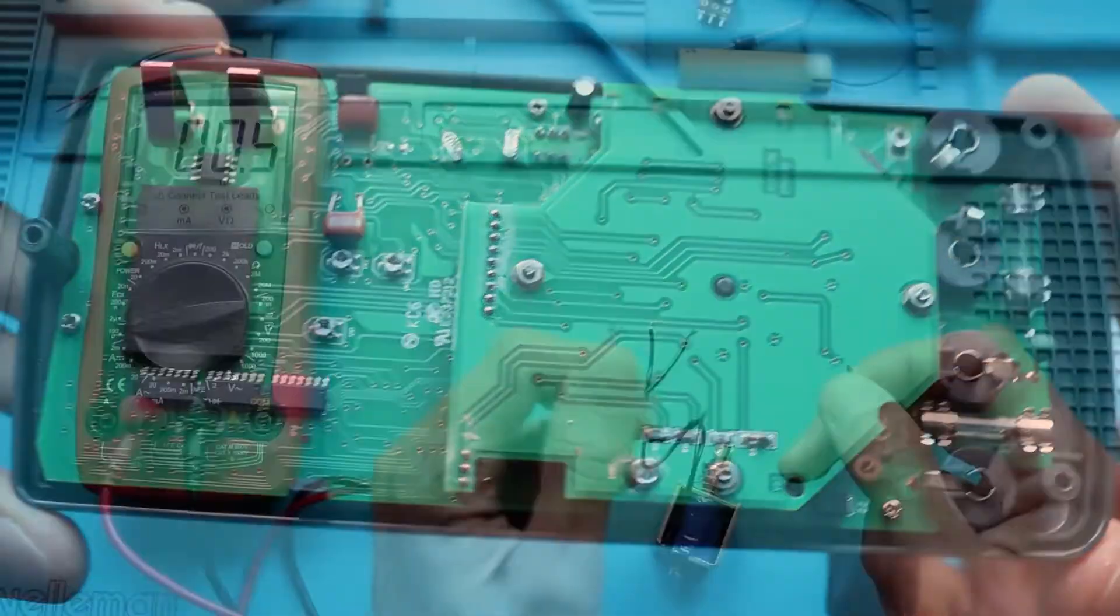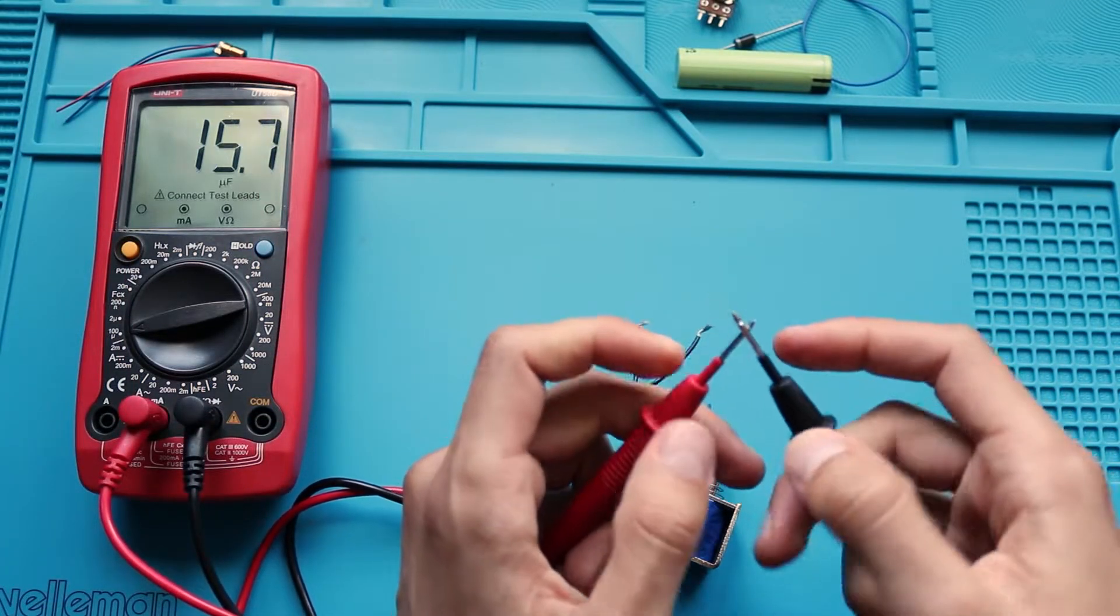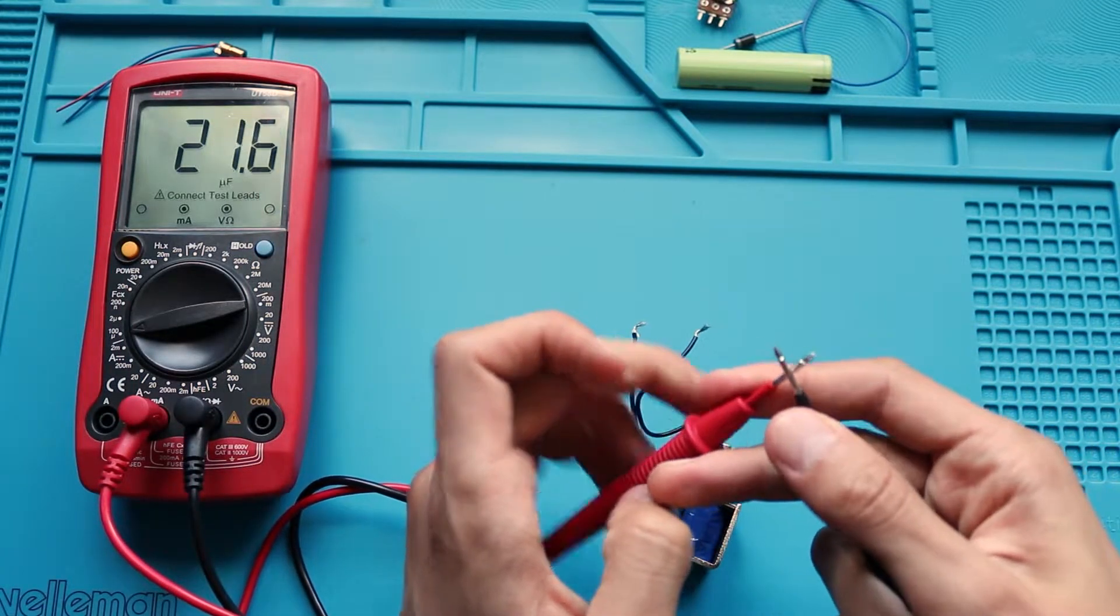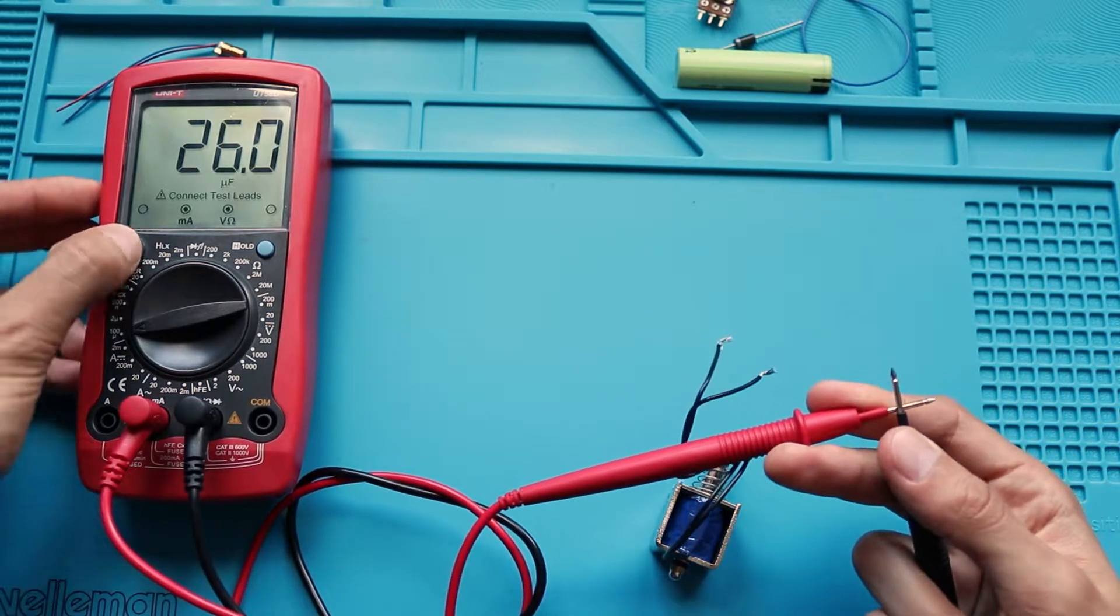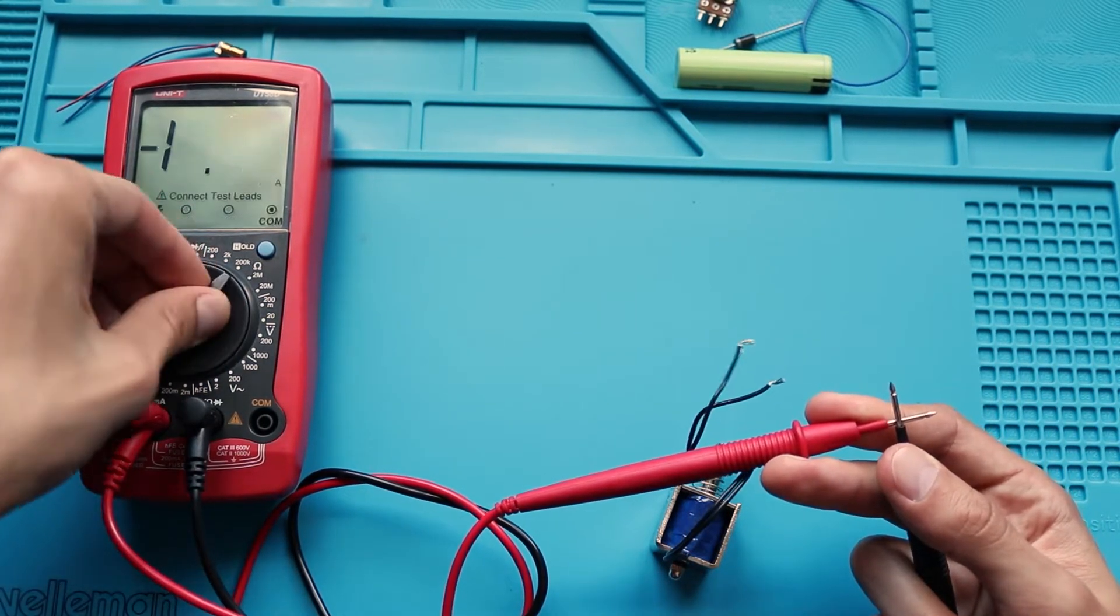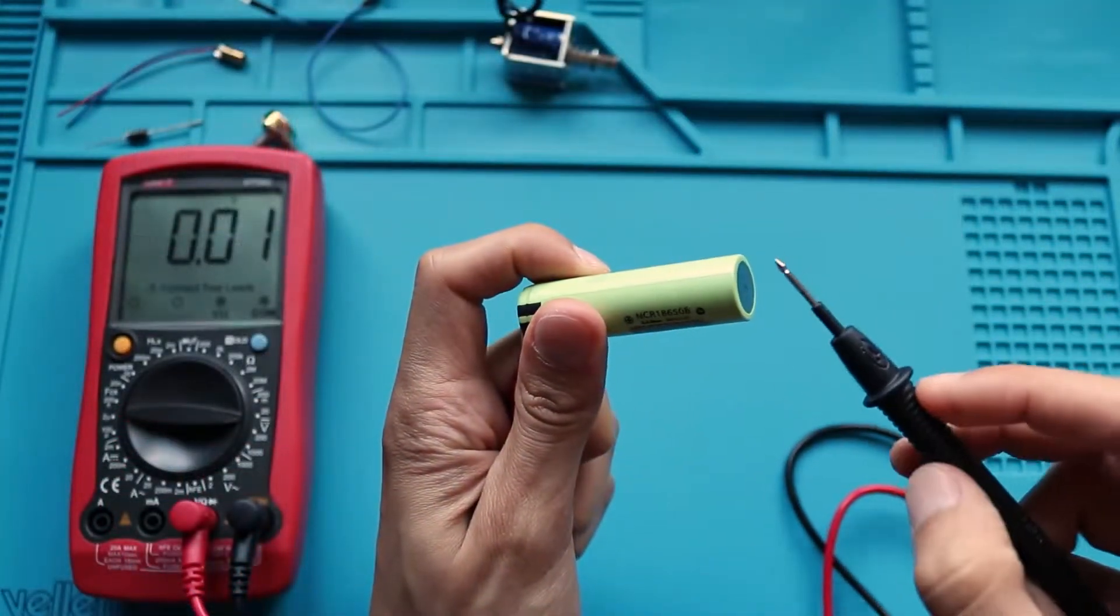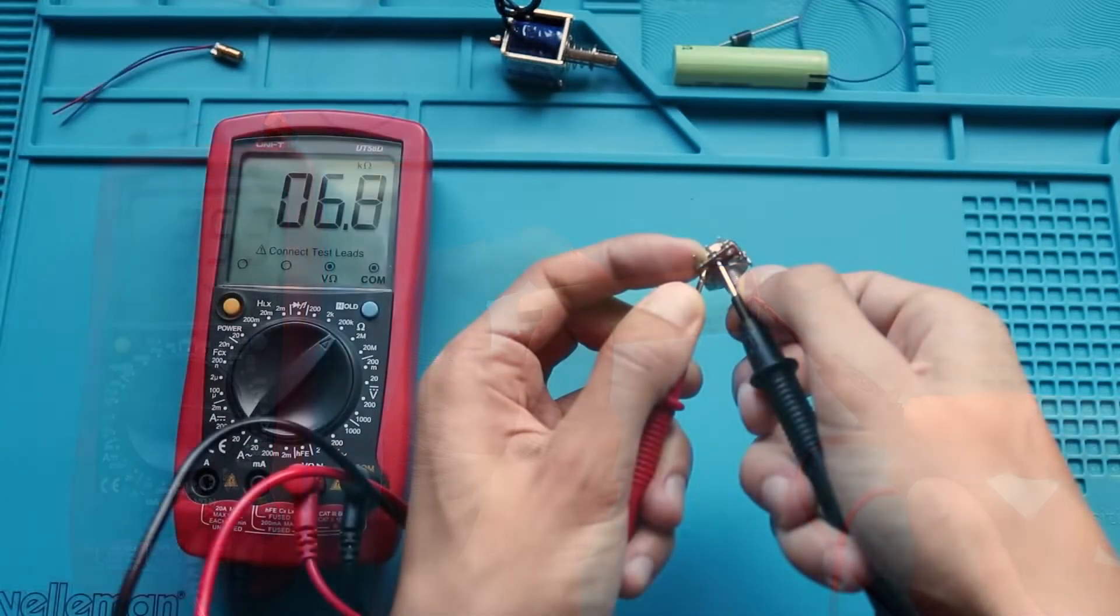The most annoying thing about any multimeter is when you need to measure something but the battery is discharged. When the battery is discharged, it measures inaccurate data with terrible error, wrong voltage levels and component nominal values, making multimeter usage impossible.